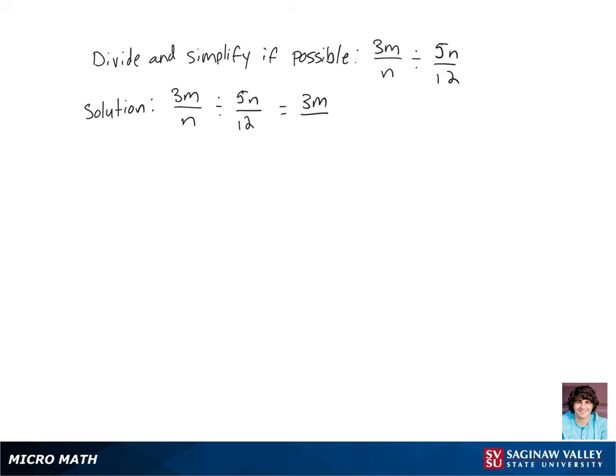So we're going to get 3m over n times the reciprocal of 5n over 12, which is 12 over 5n.